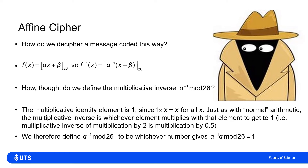I'll define alpha-inverse mod 26 to be whichever number gives me: alpha-inverse × alpha mod 26 = 1. Because then, if I multiplied by alpha and then by alpha-inverse, I'd be multiplying by 1 — so I would not be changing the input.